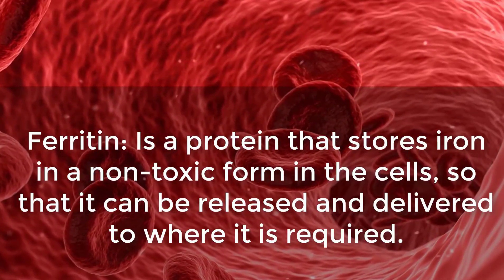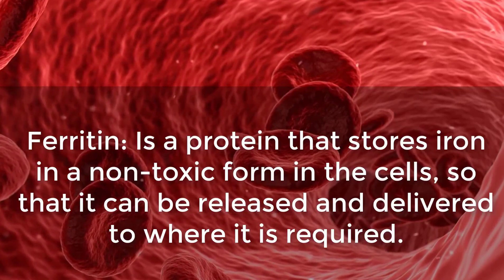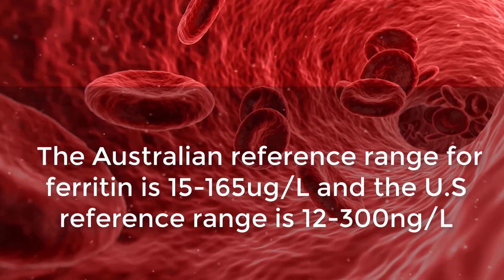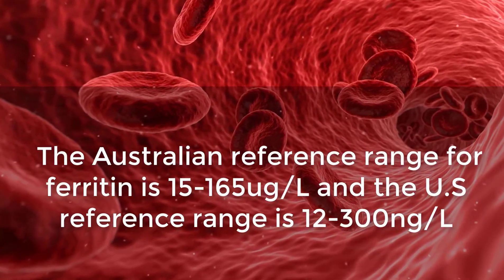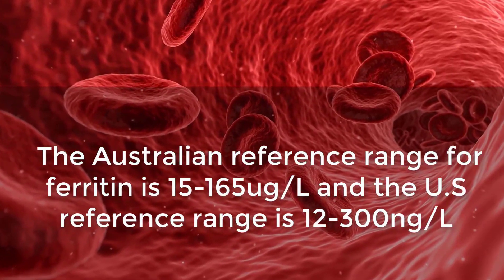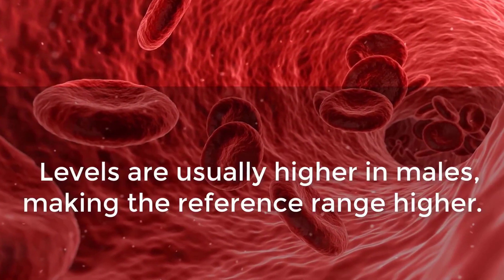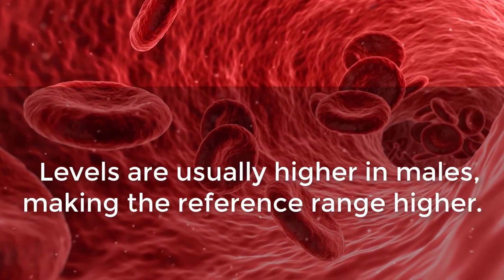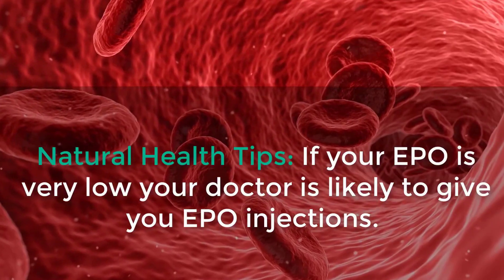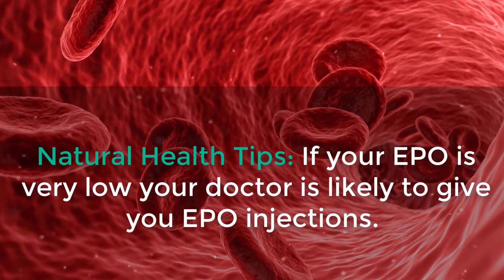Ferritin is a protein that stores iron in a non-toxic form in the cells so that it can be released and delivered to where it is required. The Australian reference range for ferritin is 15 to 165 micrograms per liter, and the US reference range is 12 to 300 nanograms per liter. Levels are usually higher in males, making the reference range higher.